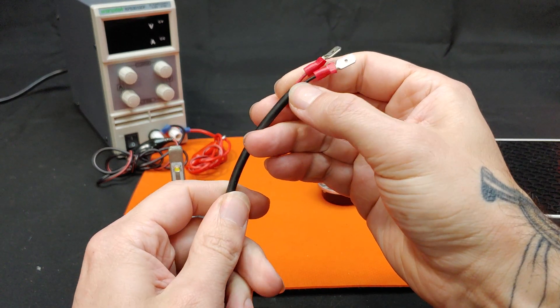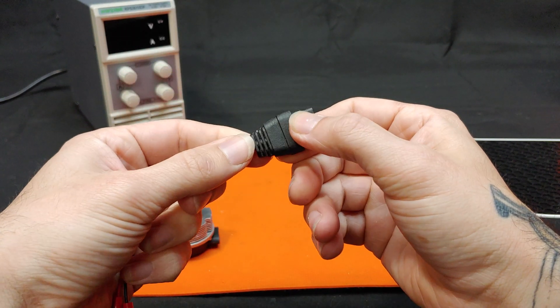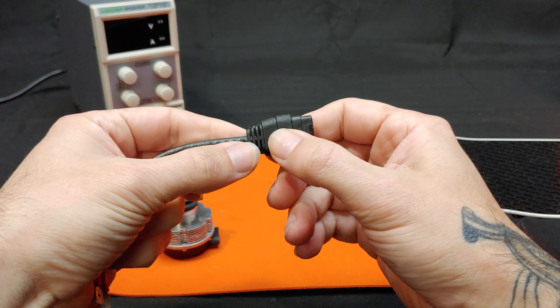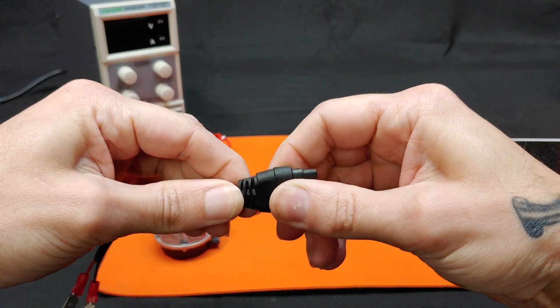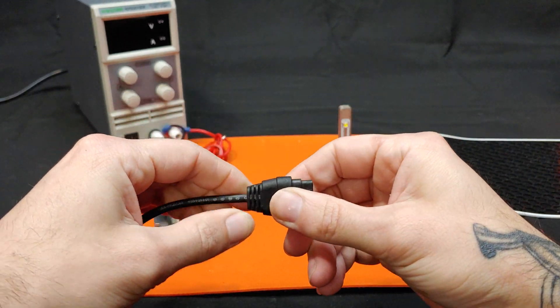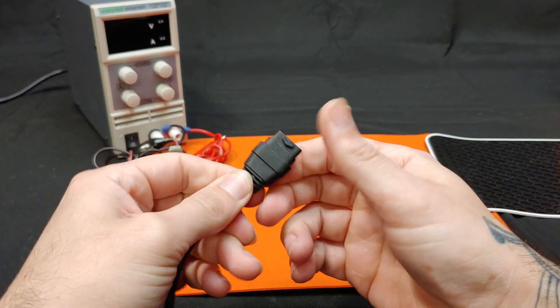The wires go into this thicker rubber sheath, which comes down to this connector. It has strain relief, and even after six years of being in storage, the strain relief is still functional and pretty soft.